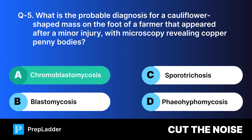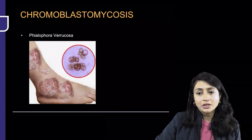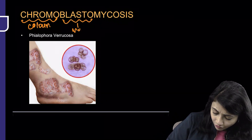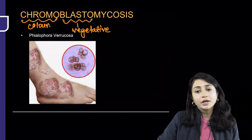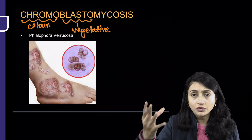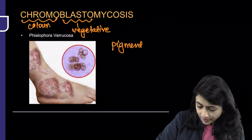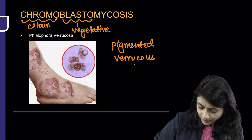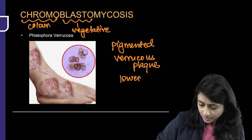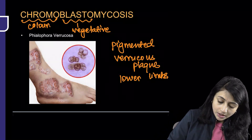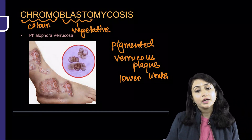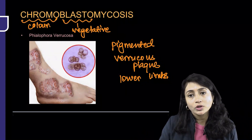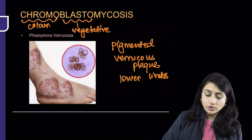The correct answer is chromoblastomycosis. Chromo means color, blasto means vegetative, and mycosis means fungal infection. It is a deep fungal infection that presents with pigmented verrucous plaques on the lower limbs. The causative organism is Phialophora verrucosa. So you get pigmented verrucous asymptomatic plaques on the lower limbs.